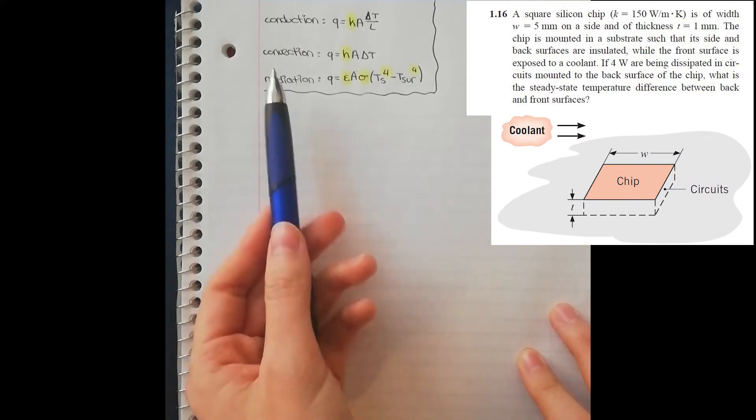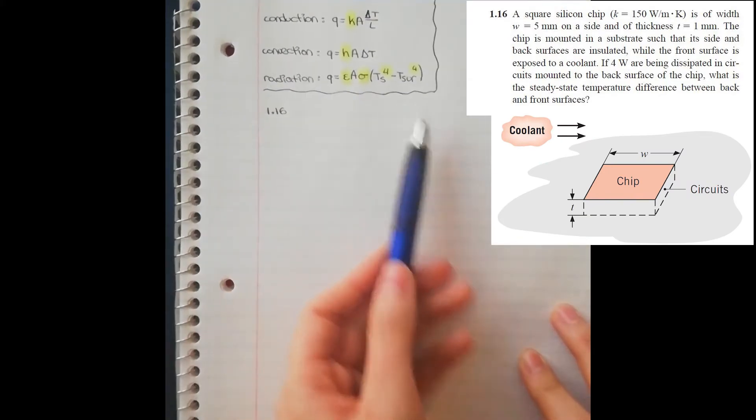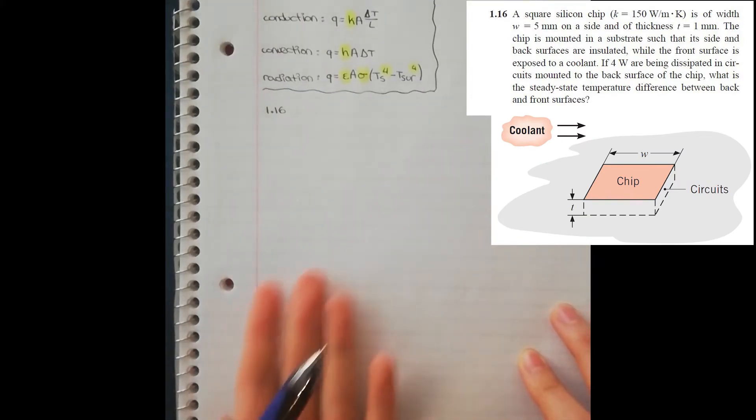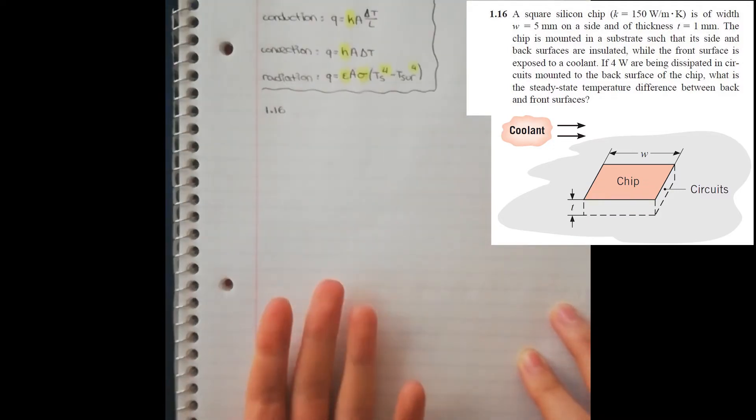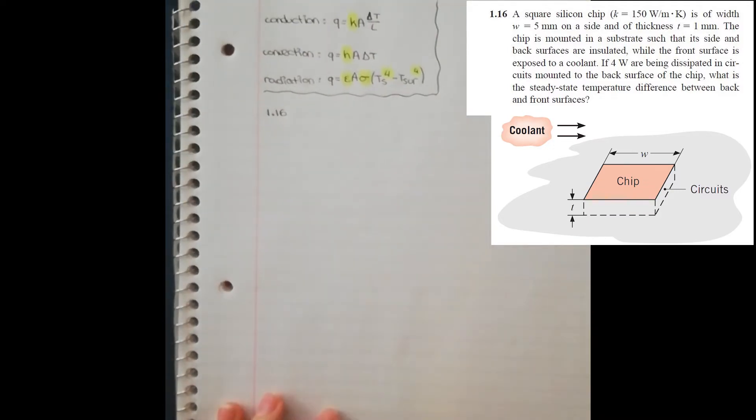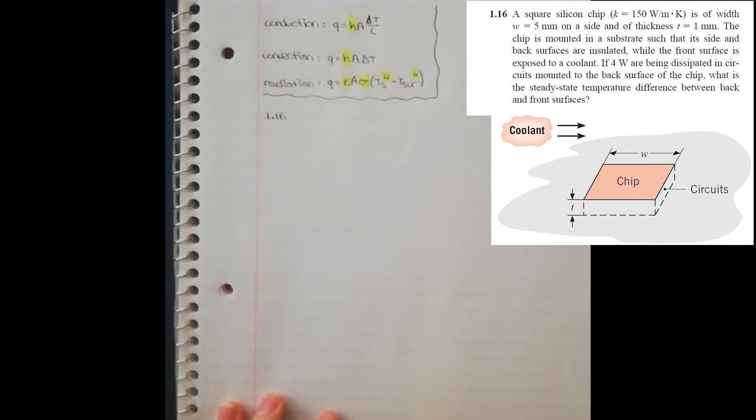Look in your problem and see if any of the highlighted characters show up in the problem. So, yes, K is there, so that means that we're working with conduction. Next up, you want to look at the image to understand what exactly is happening. If there is no image in the problem, draw one.